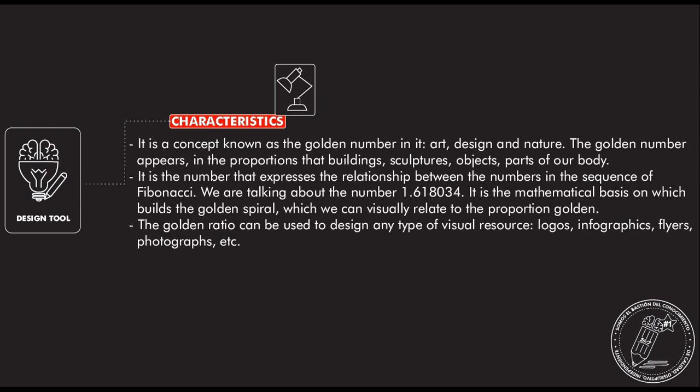The golden ratio is a design tool with the following characteristic: it is a concept known as the golden number in art, design, and nature. The golden number appears in the proportion that builds sculptures, objects, and parts of our body. It is the numbers that express the relationship between the numbers itself and in the sequence of Fibonacci — we are talking about the number 1.618034.